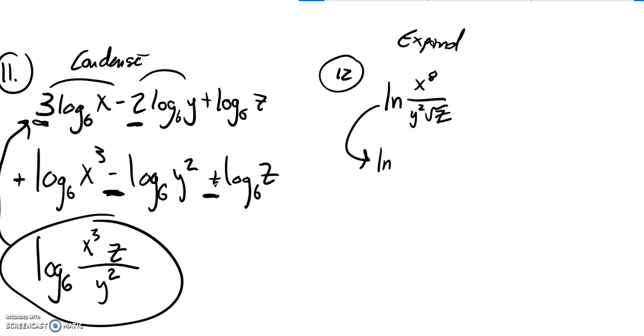Anything that's from the numerator is going to be positive. So this is going to split into that statement. And each of these get their own natural log statement. Anything that's from the denominator is negative. So negative natural log of y squared, and then minus natural log of the square root of z.